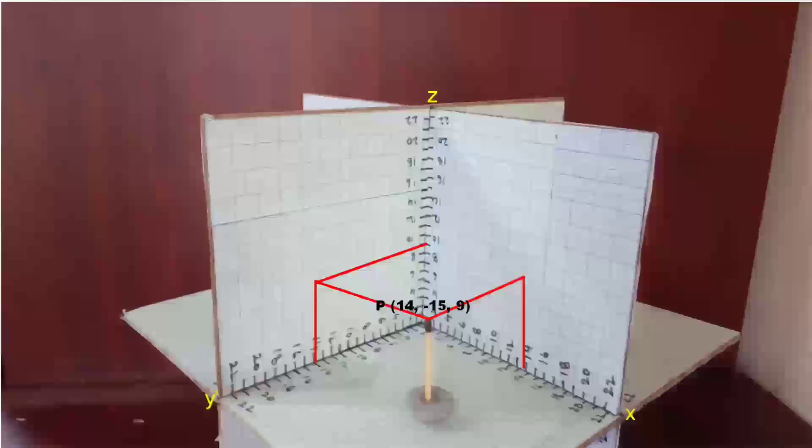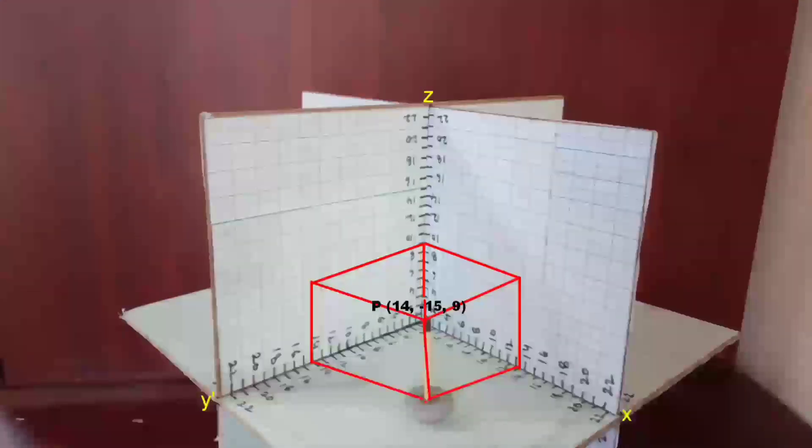If you draw this, you will get a figure like this. And the coordinates of point P is 14, minus 15, and 9. If you complete this figure, you will get a cuboid with point P as one of its vertices.